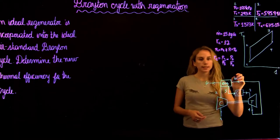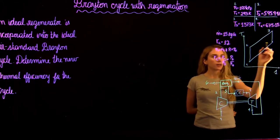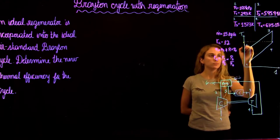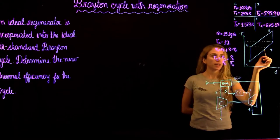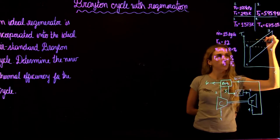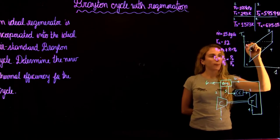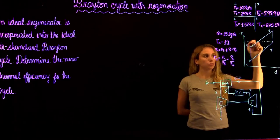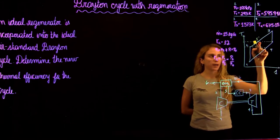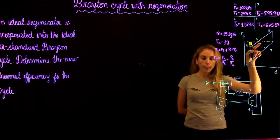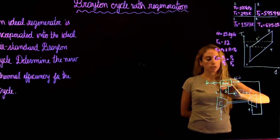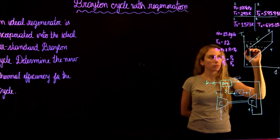We use the energy from the hot gases to heat the flow coming out of the compressor before it goes to the combustion chamber. In our diagram, if we have an ideal heat exchanger with no losses, we go from state 2 to state 5 prime. But because we always have losses and our heat exchanger is not perfect, we heat from 2 to 5.